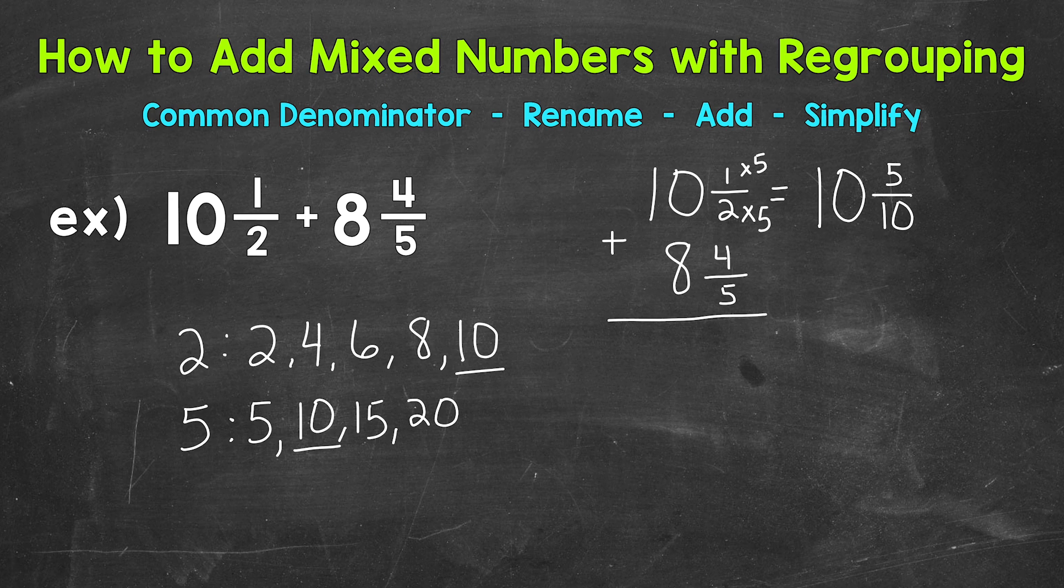Let's rename 8 and 4 fifths. So that equals, remember, don't do anything with the whole number, 8 and how many tenths? So let's use equivalent fractions. How do we get 5 to equal 10? Well, 5 times 2 is 10. Whatever we do to the bottom, we must do to the top. So 4 times 2 is 8. 8 and 8 tenths is equivalent to 8 and 4 fifths. But now we have that common denominator of 10 and we are ready to add.